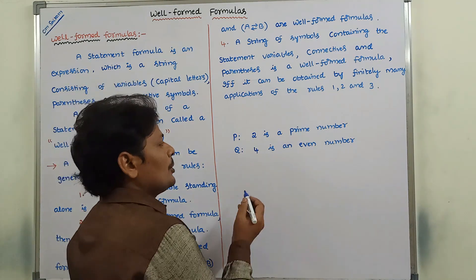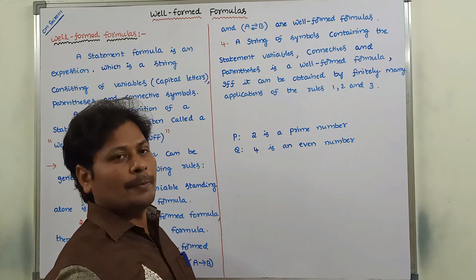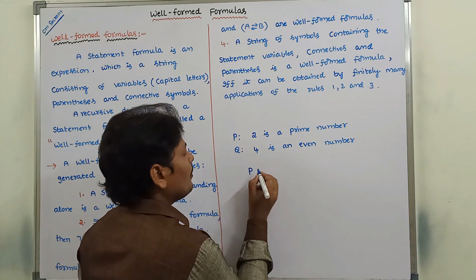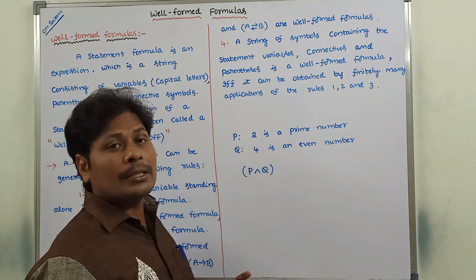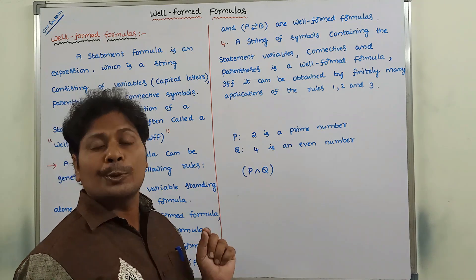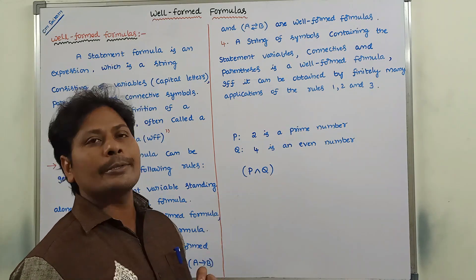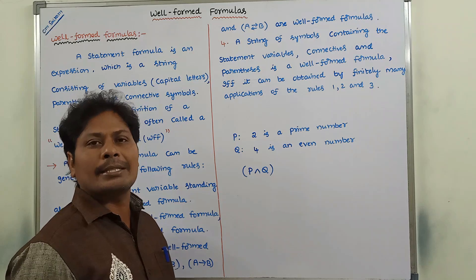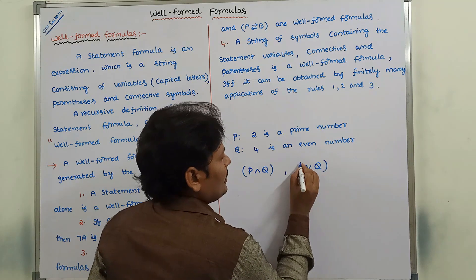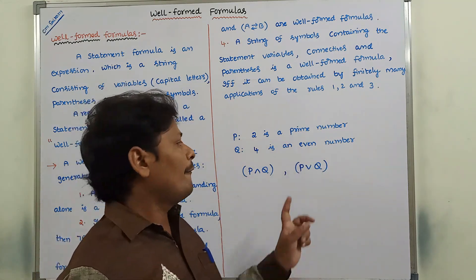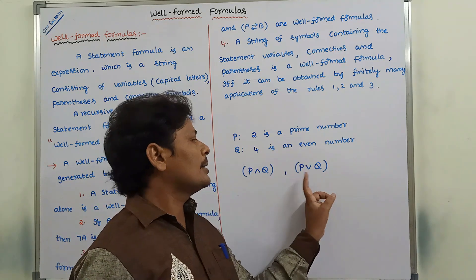From these two statements, we have to write some statement formulas. The first one is P and Q. Check whether it is a statement formula or not. Here P and Q are two statement variables, 'and' is the logical connective, and parenthesis is also there. Hence, we can say that it is a statement formula. The next one is also a statement formula, where P and Q are two statement variables, R is the connective, and parenthesis is there.